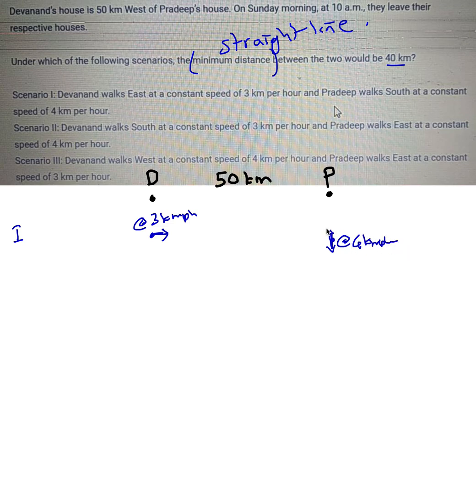Now in this situation, it's not going to be very apparent how the distance is going to behave. For example, when they start the distance is the straight line. After some time Devendra has reached a little ahead, Pradeep has reached a little ahead, and the distance between them is now this straight line. But is this distance reducing, is it increasing, what is the minimum value?